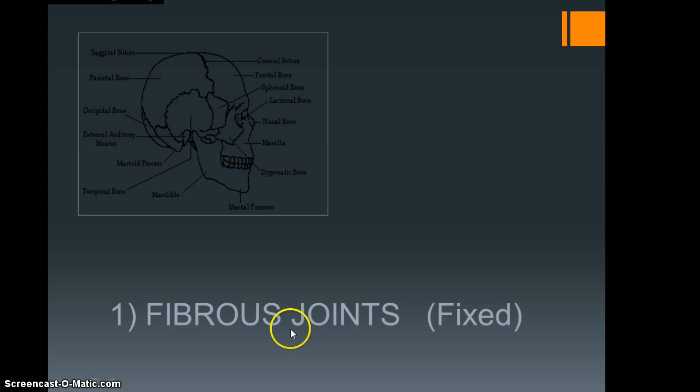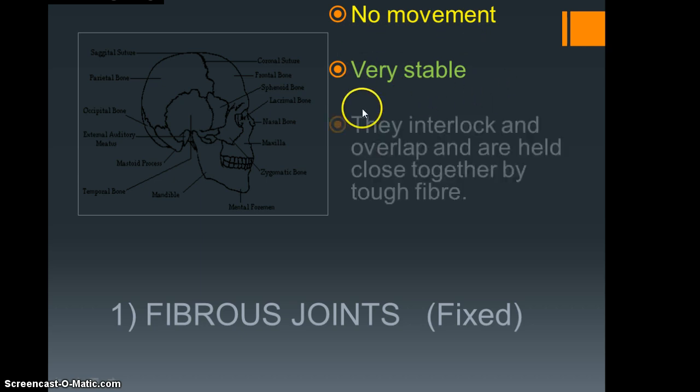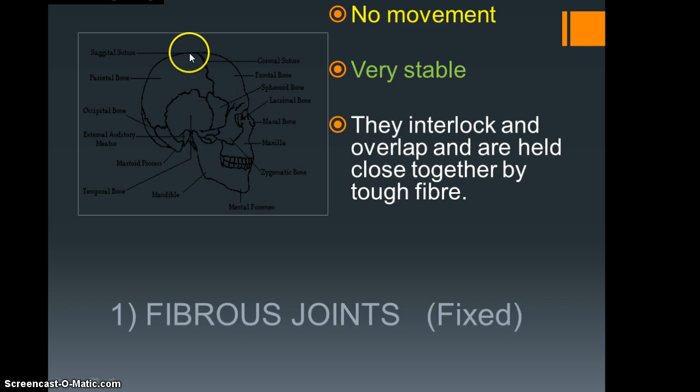The giveaway is in the name. The type of joint, this one here is the fixed, the fibrous joint, and that's how they're fixed. So there's no movement, they're very stable, and they interlock and overlap. A good example would be the joint within your cranium.